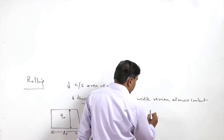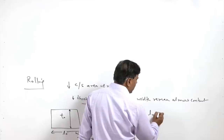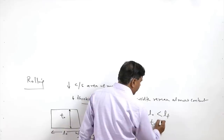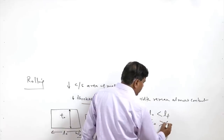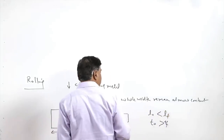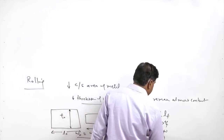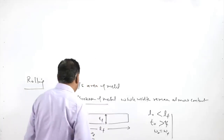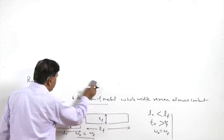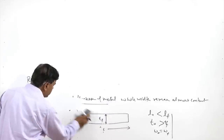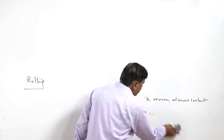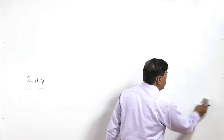Whenever rolling is carried out, L0 is less than Lf, and T0 is significantly greater than Tf. Thickness is reduced and length is increased while width W0 and Wf almost remains constant. This is what is achieved through rolling. Rolling reduces the cross section throughout its length.